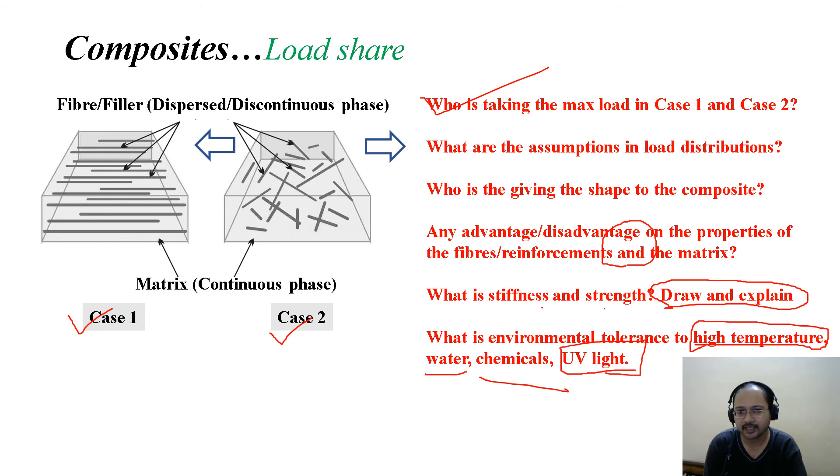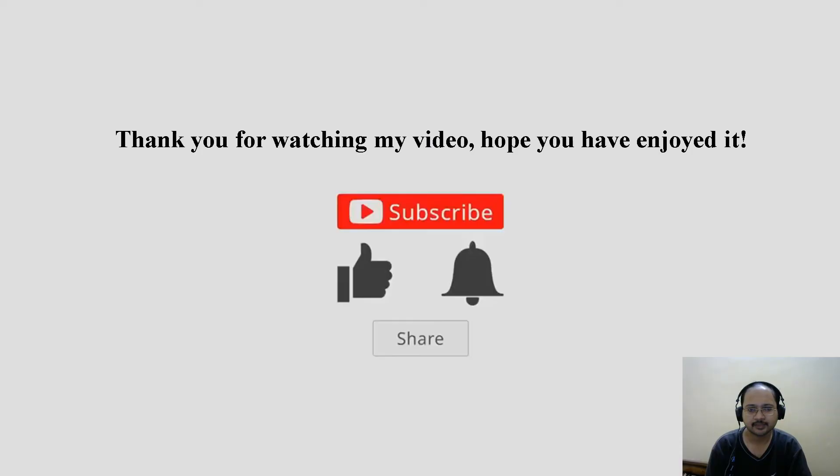When the matrix is curing along with the reinforcement, the outer layer of the composite structure is the matrix itself. That means if my matrix is good enough to tolerate high temperature, water, chemicals, and UV light, then the outer surface of the composite is protected.